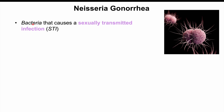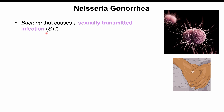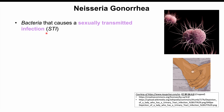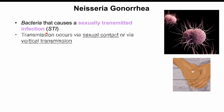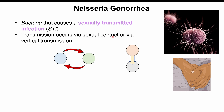Neisseria gonorrhea is a bacteria that causes a sexually transmitted infection, or STI — the bacteria responsible for gonorrhea. It not only causes an STI, but can cause other types of infections. Transmission occurs via sexual contact or vertical transmission. Sexual transmission occurs between individuals, while vertical transmission occurs during vaginal delivery, where the neonate can become infected.